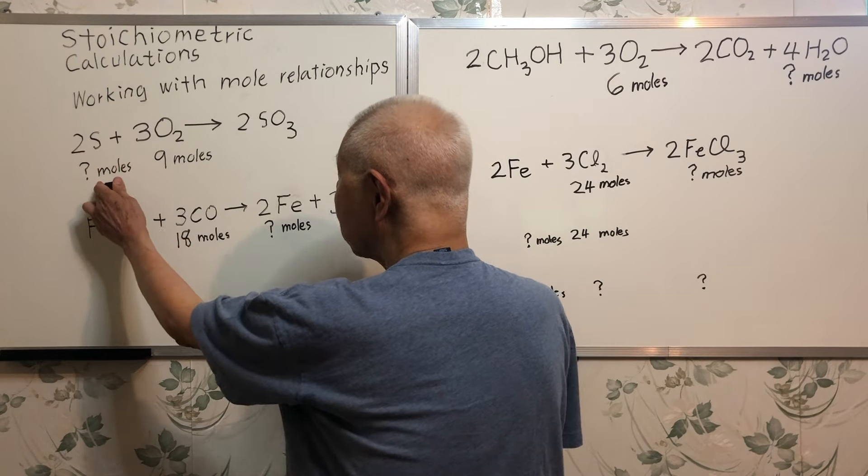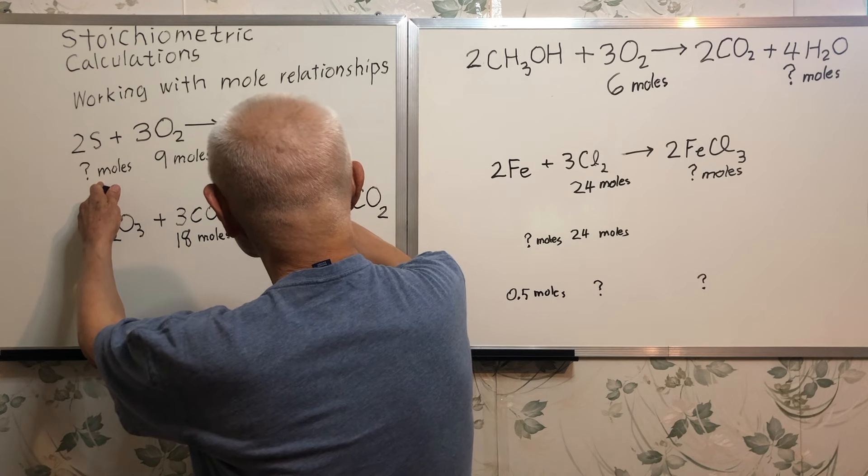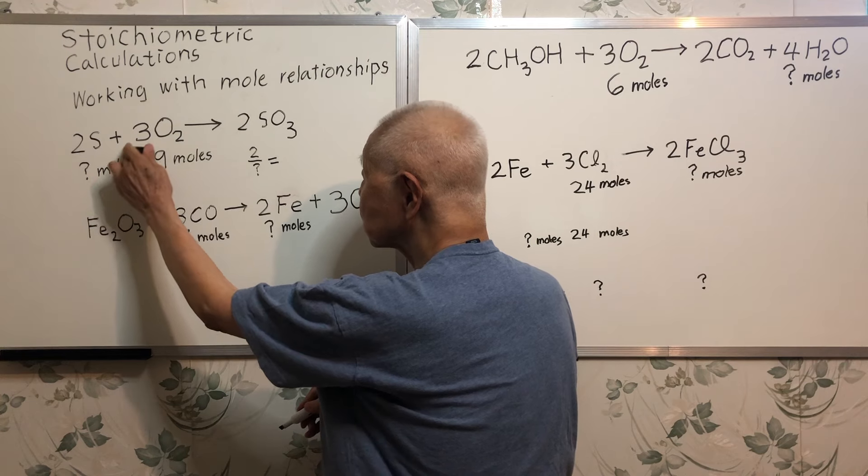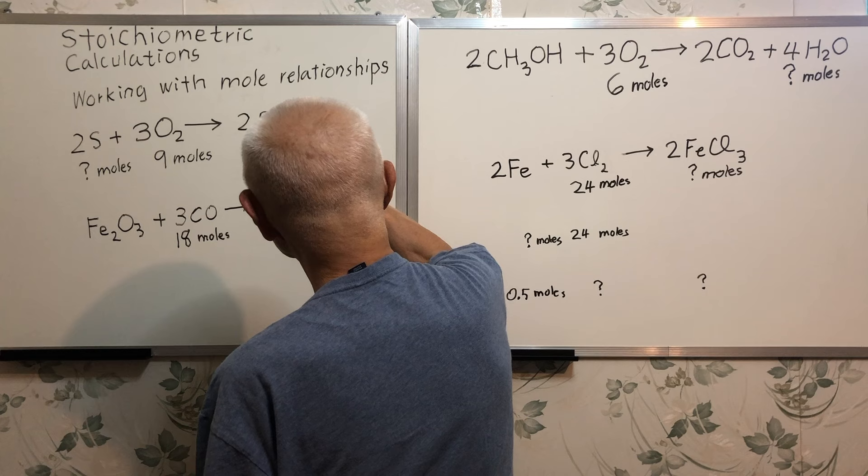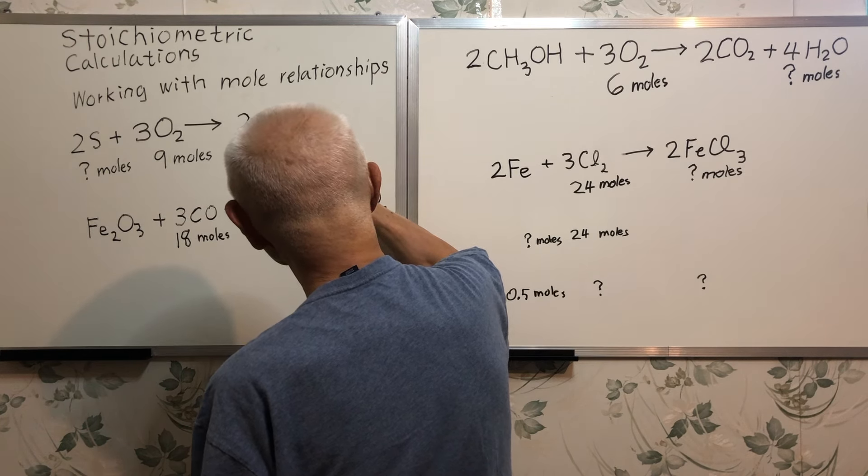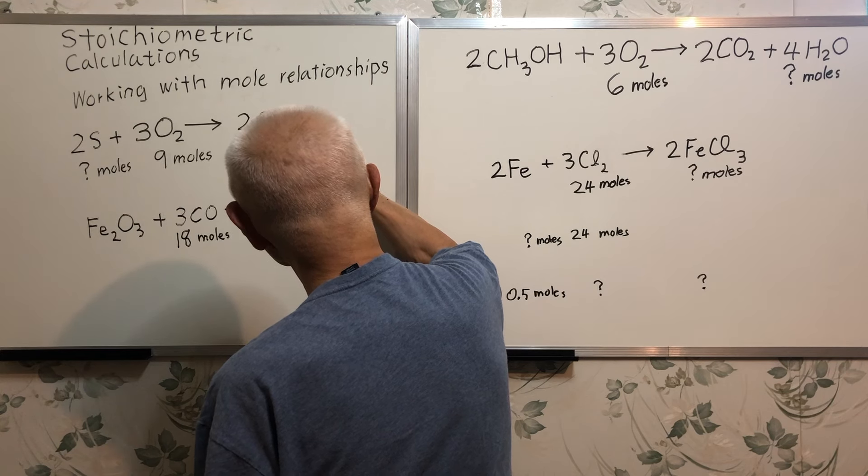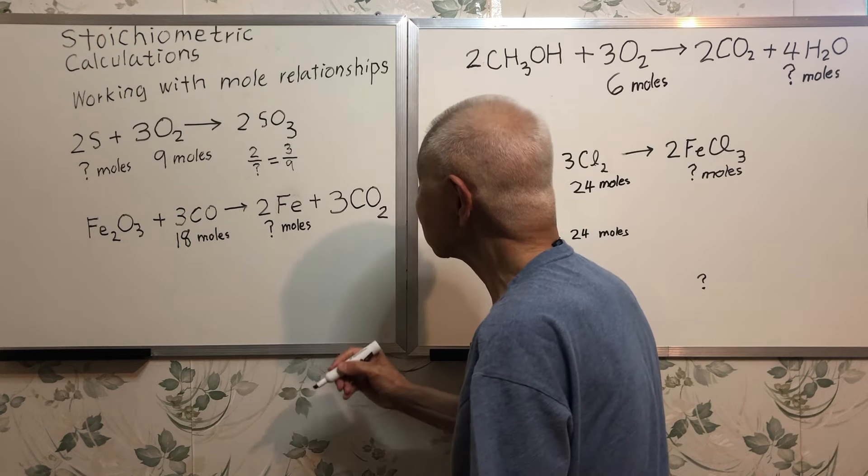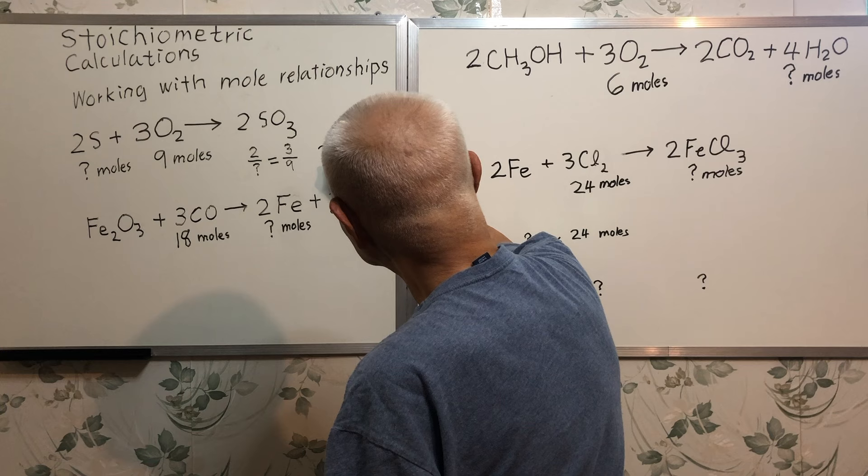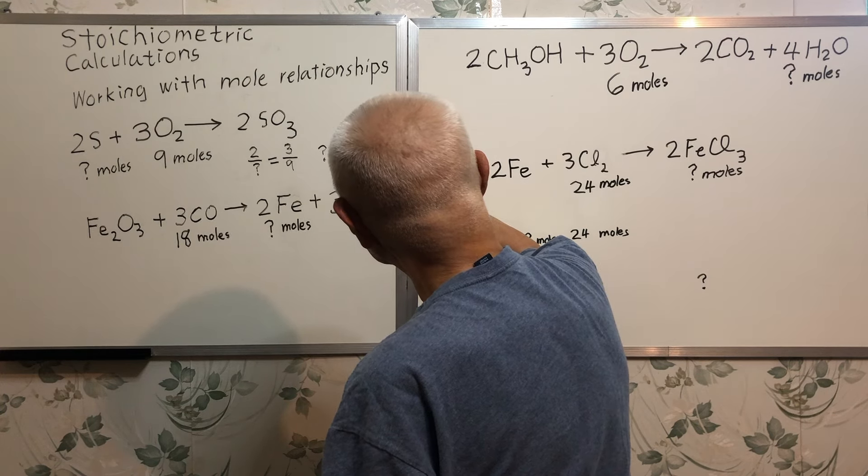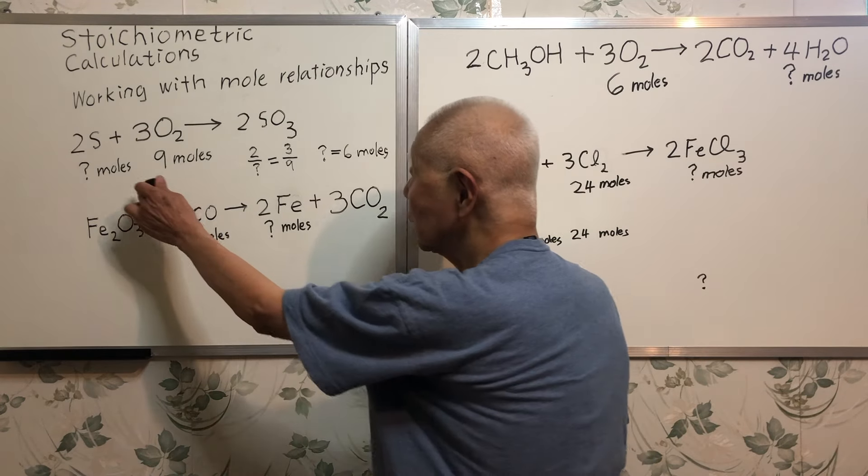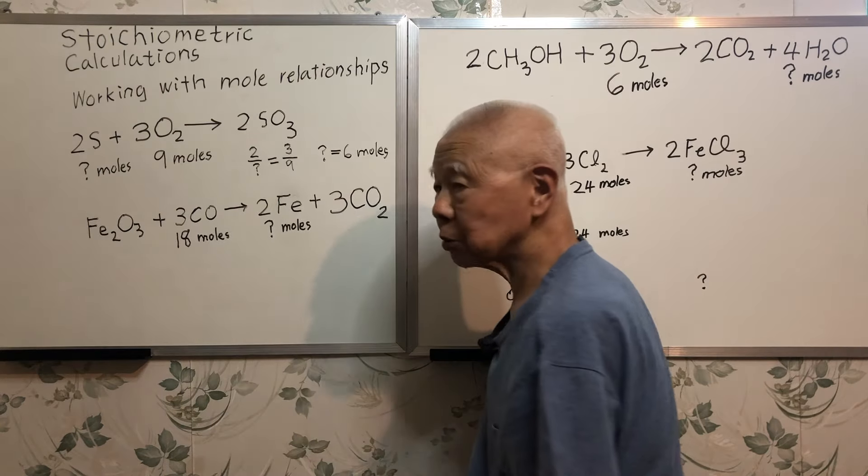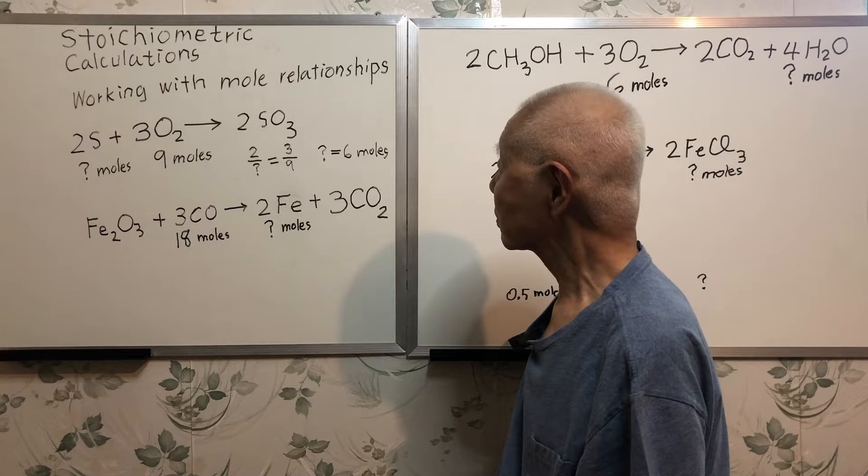Two over question mark. Two over the question mark is equal to three over nine. So what is the question mark? It's six. So the answer is you need six moles of sulfur to react with nine moles of oxygen to perform the reaction. It's just a ratio problem.